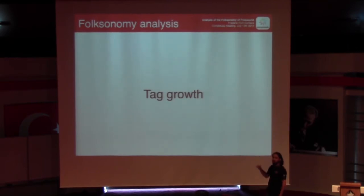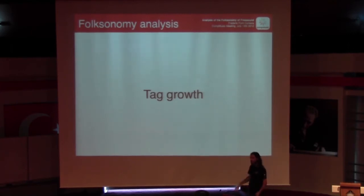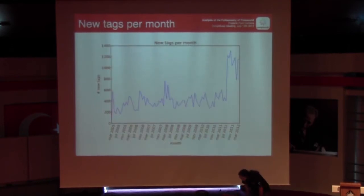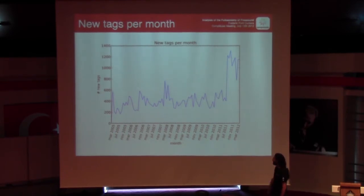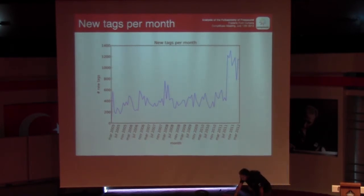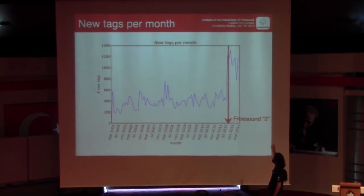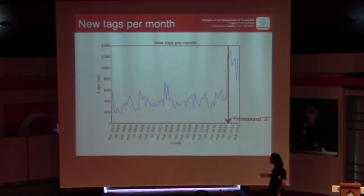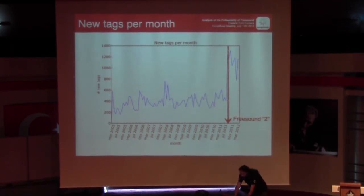Now I'll look at different specific aspects of that folksonomy. First, we'll see how the vocabulary of the folksonomy has been increasing. This is the evolution of new tags introduced every month since 2005 until now, and we see that there is a slightly growing tendency. Especially in September 2011, there is a high surge, and this is due to the software upgrade we released in September — we call it Freesound 2. That was a major change in the site; it became more popular and now we have more users, and you can see this effect clearly in the number of new tags per month.